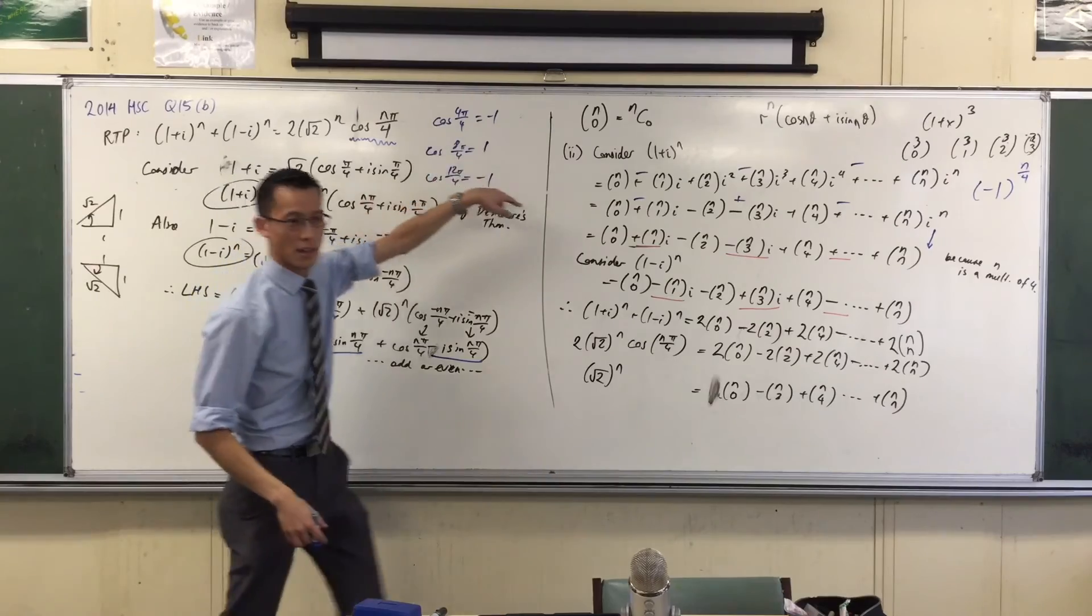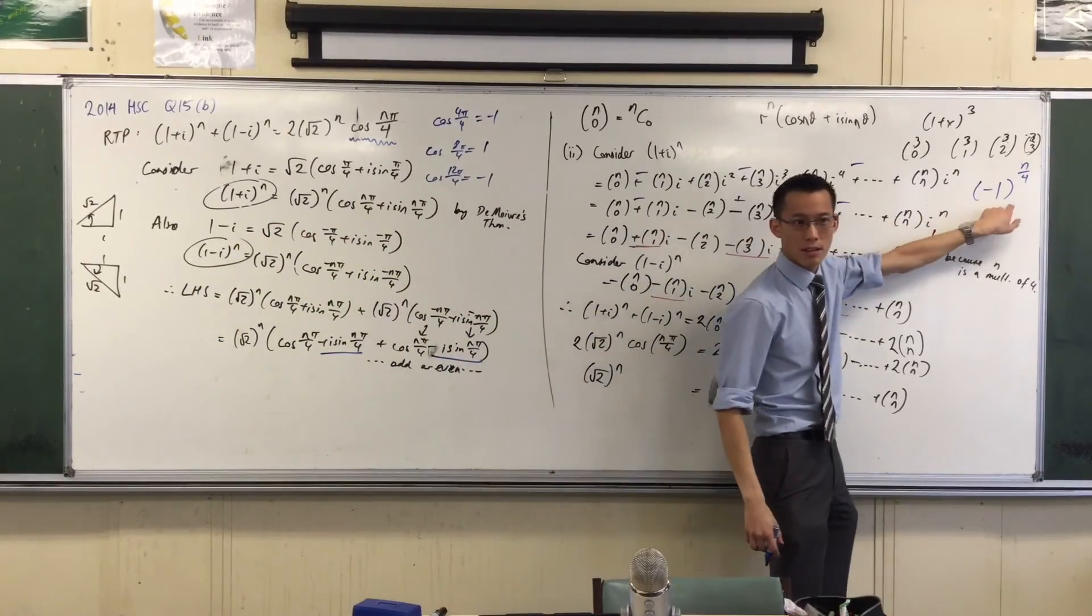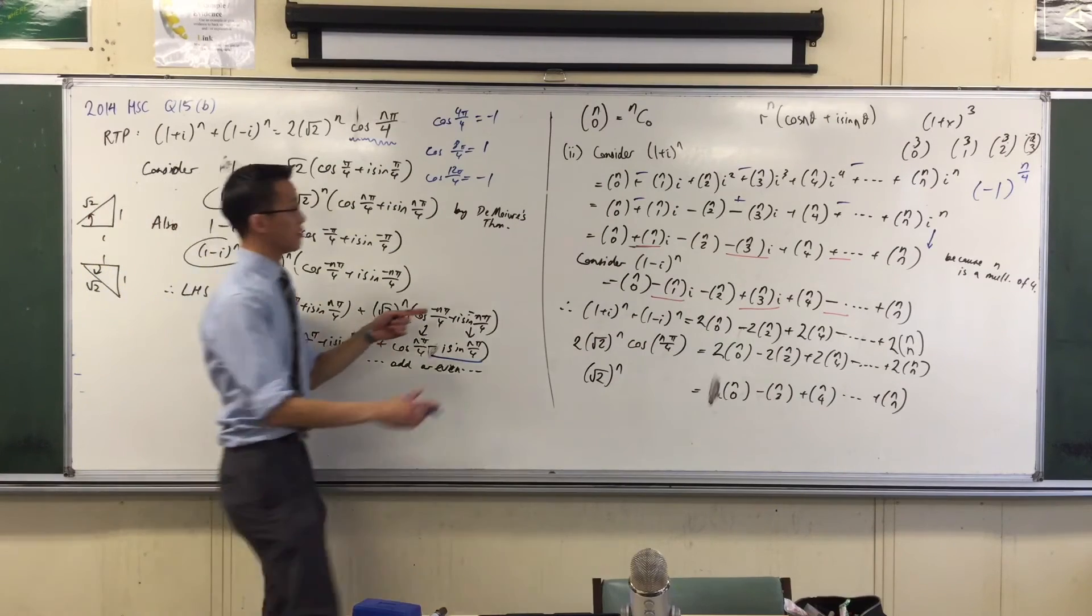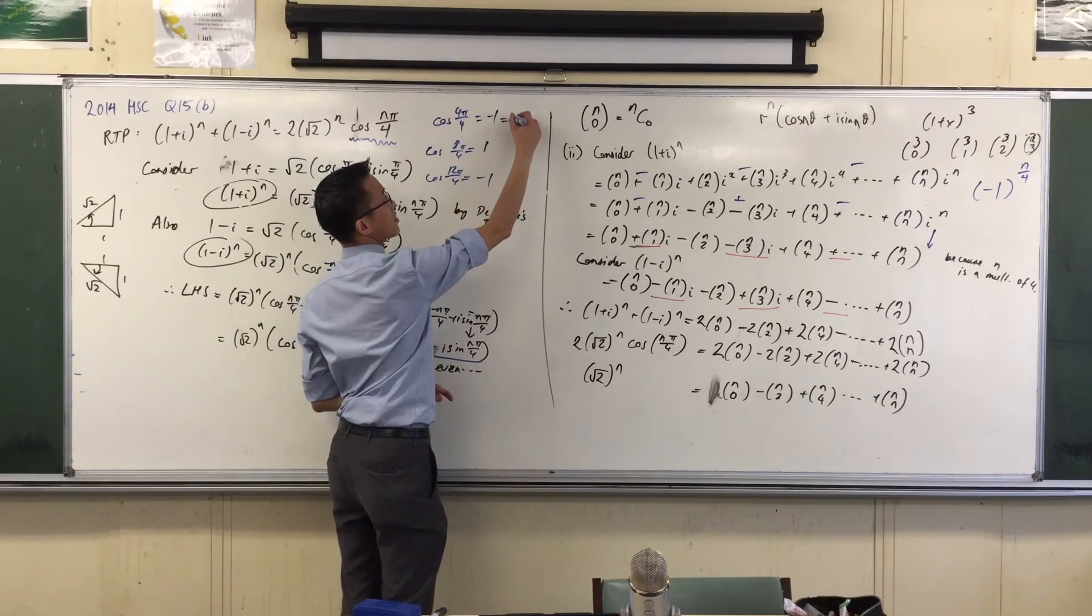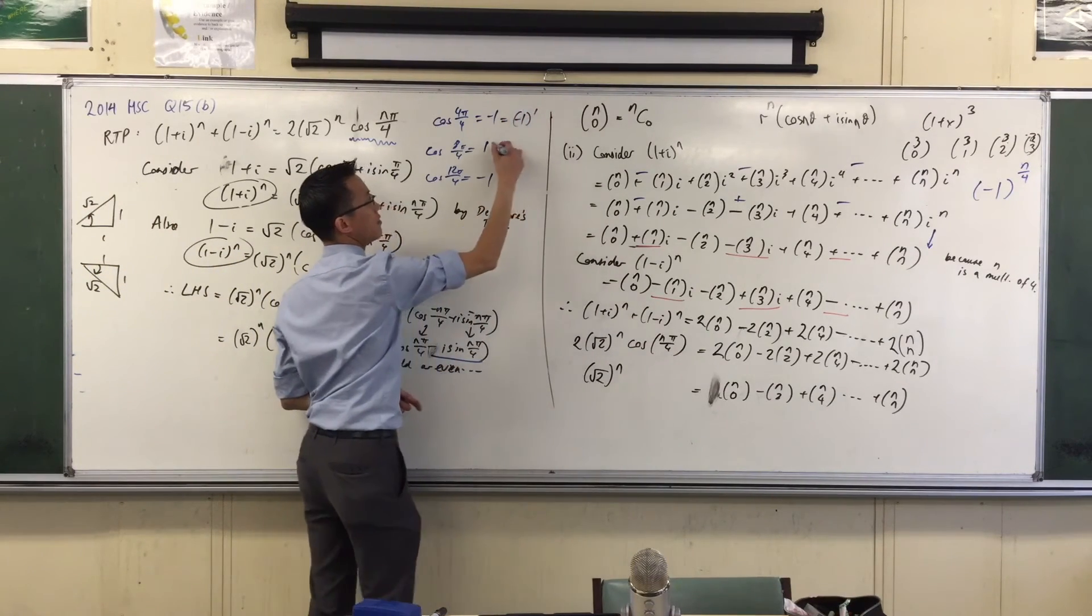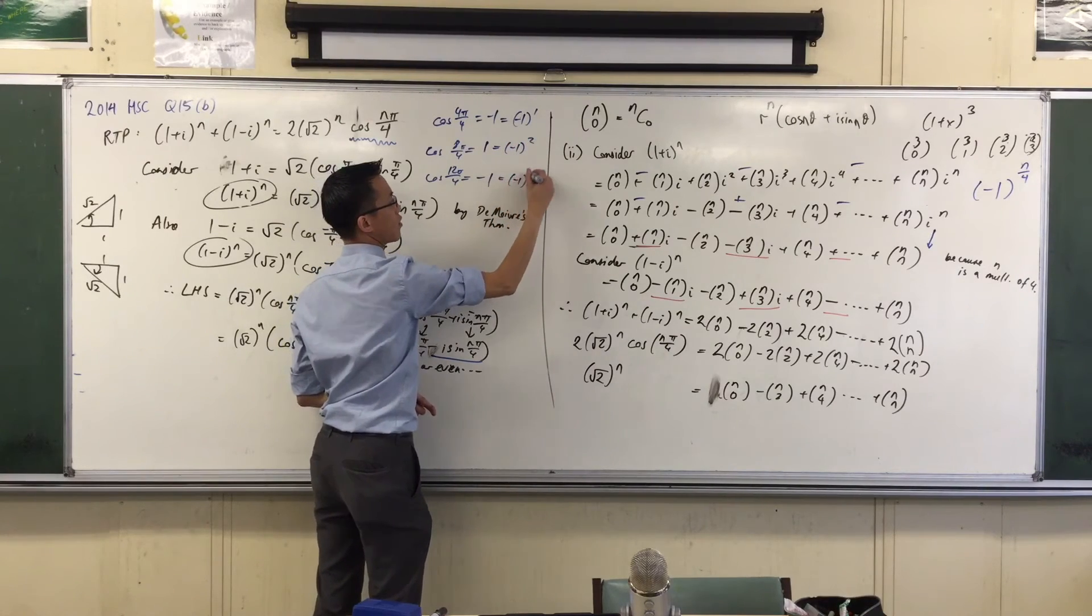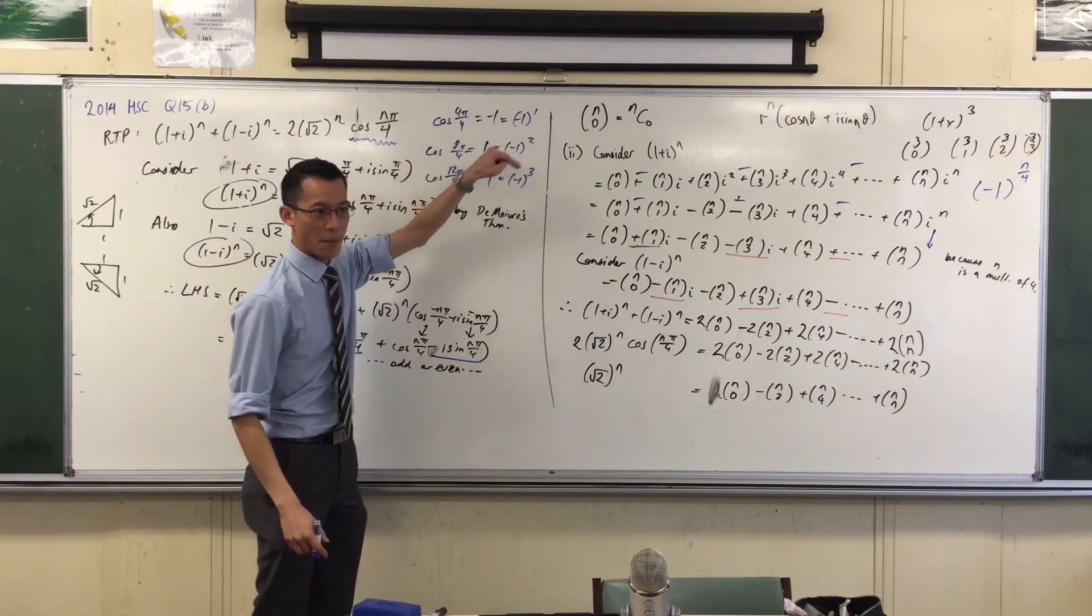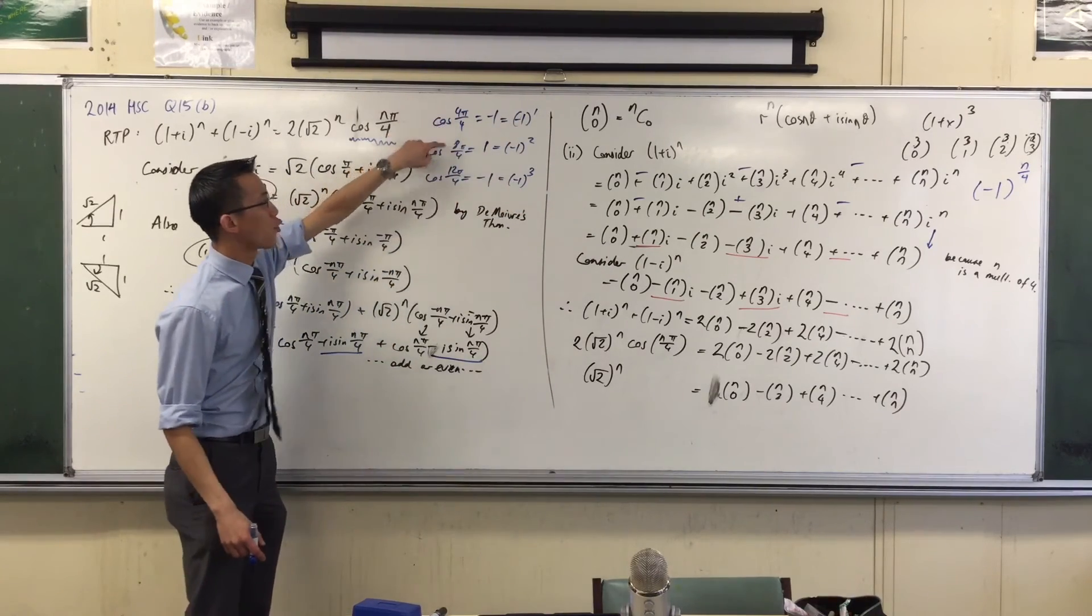Have a look, have a look. Do you see? You see? This is just negative 1 to the 1, negative 1 squared, negative 1 cubed, right? I want it to go up and up and up. How's this related to the 4, 8, 12?